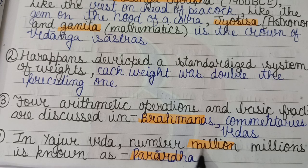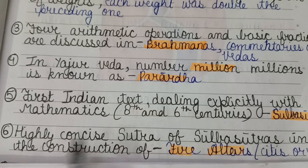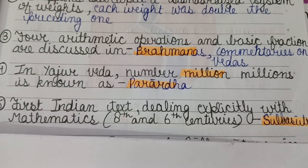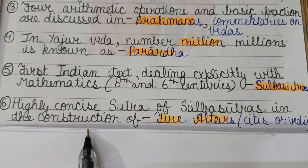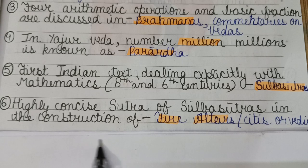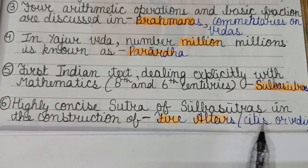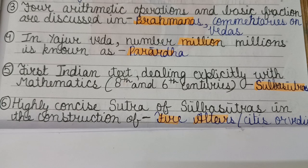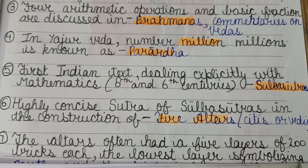The first Indian text dealing explicitly with mathematics, from the 8th to 6th century BCE, is the Sulva Sutras — a very important book for mathematics. The highly concise sutras of the Sulva Sutras deal with the construction of fire altar sites, known as Vedis, used for different activities.